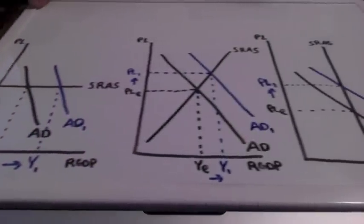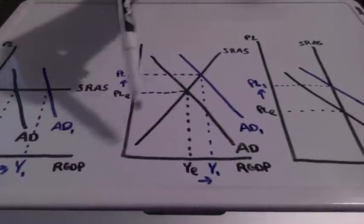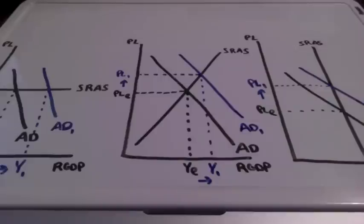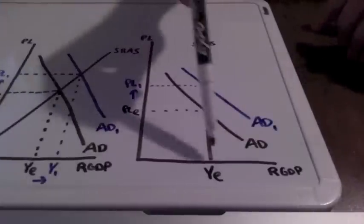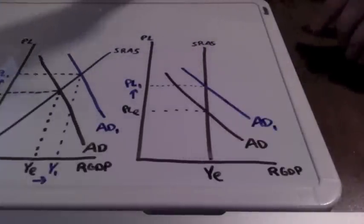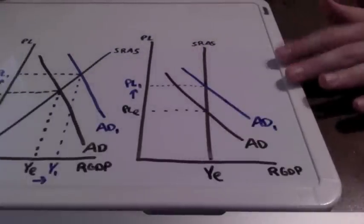For our second graph we have a relatively elastic short run aggregate supply curve. And for our third graph we have a perfectly inelastic short run aggregate supply curve.